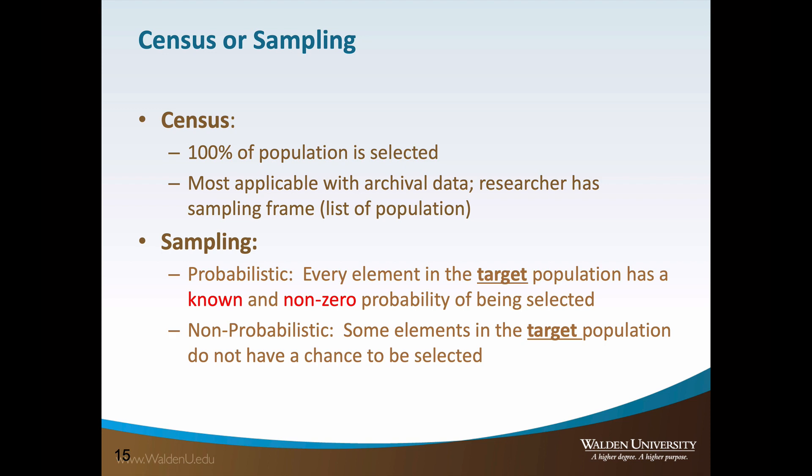Let's discuss the critical concepts of sampling. Oftentimes, the researcher has a sampling frame and chooses to use the entire frame — a sampling frame can be a listing of participants or cases. A census is conducted if the researcher uses the entire frame, such as the U.S. census conducted every decade. However, sampling is more commonly used in research. Probabilistic or random sampling and non-probabilistic or non-random sampling are two broad sampling typologies, each with advantages and disadvantages. Please review the sampling video tutorial for further detail.